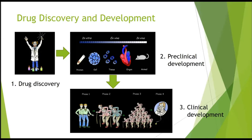The clinical trials are the longest and most expensive stage of the process, consisting of three phases. In the first phase, up to 100 healthy volunteers are involved. The aim of this phase is to evaluate the safety of the drug on humans, its pharmacokinetics in the human body, and any immediate side effects.